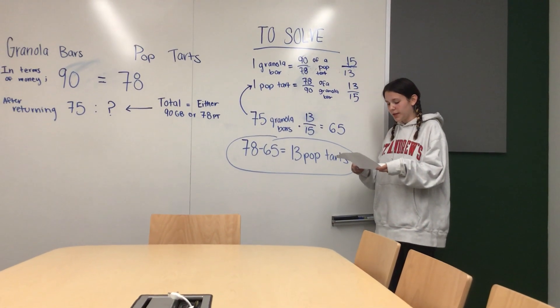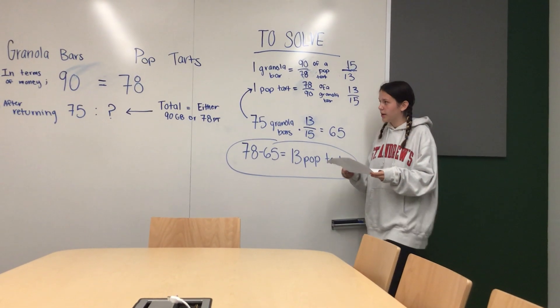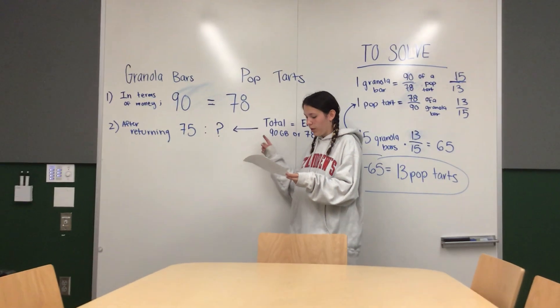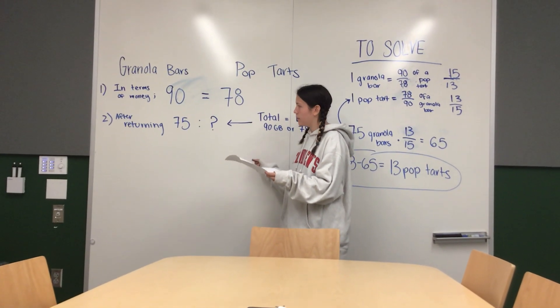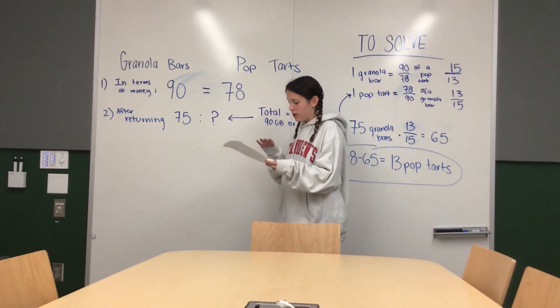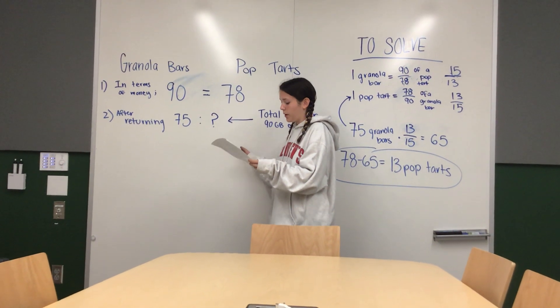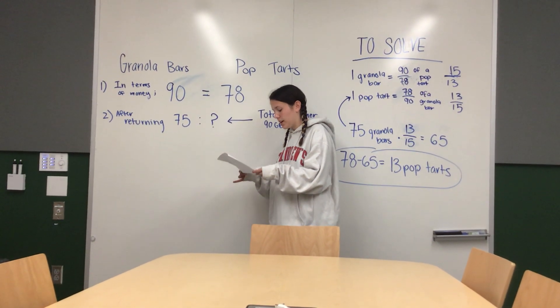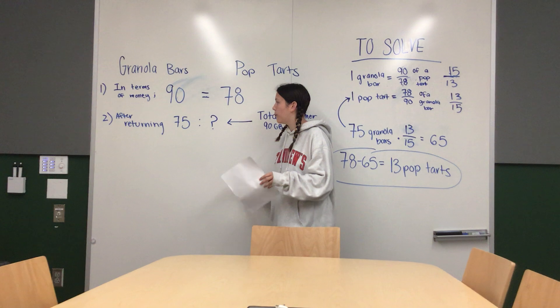Okay, so the original problem is Taylor has enough money to buy either 90 granola bars or 78 Pop-Tarts. After returning from the store, Taylor has no money, 75 granola bars, and P Pop-Tarts. Assuming that Taylor has not yet eaten anything, figure out what P is.